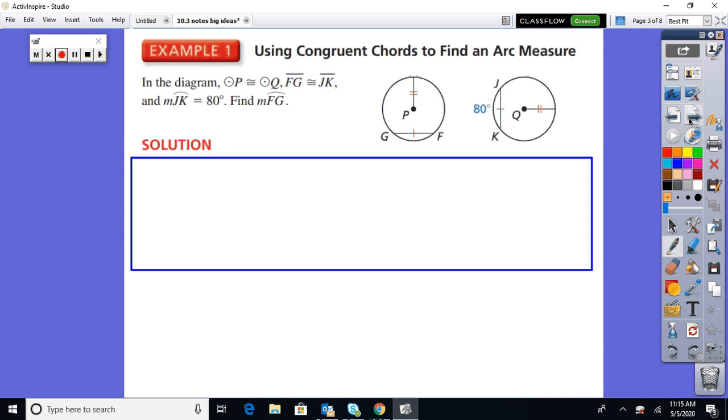Example one, using congruent chords to find an arc measure. In the diagram, circle P is congruent to circle Q. So I know everything is the same. Therefore, my radii are the same, everything. So then they're telling me that FG is congruent to JK. So this is given. Well, then if that's the case, we just talked about it, congruent chords make congruent arcs.